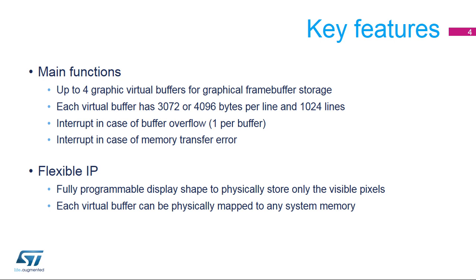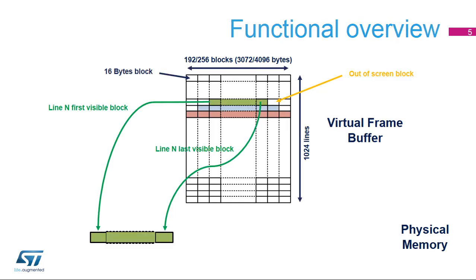Thanks to this very flexible architecture, only the visible pixels are effectively stored, and each virtual buffer can be physically mapped to any memory of the system. Each virtual buffer is seen as a continuous memory space of 3,072 or 4,096 bytes per 1,024 lines. Each line is composed of 192 or 256 16-byte blocks.